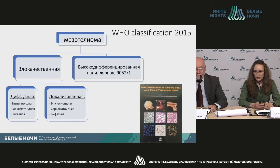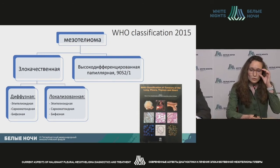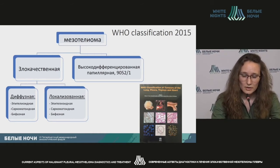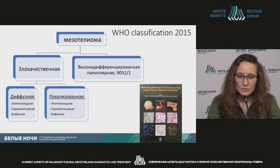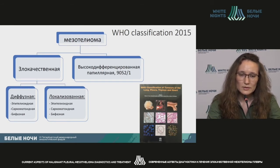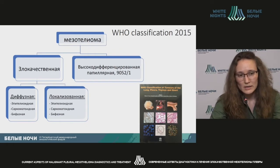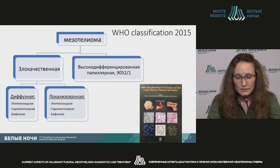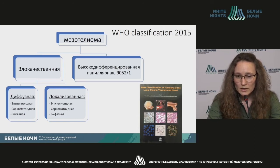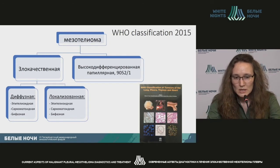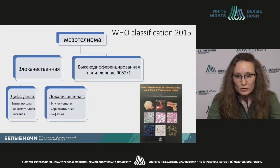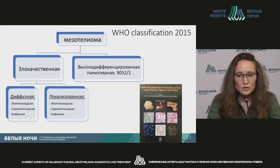The modern WHO classification is as follows. Mesotheliomas are subdivided into malignant and conditionally benign — because there's a code dash one — meaning it may be locally aggressive and has low potential for metastasis. However, it may cause local destruction. It's a papillary mesothelioma, more frequent in the abdomen than in the pleura. It's usually a neoplasm around two centimeters in size, and they may be multiple. As for malignant mesothelioma, it's subdivided into two types: diffuse and localized.